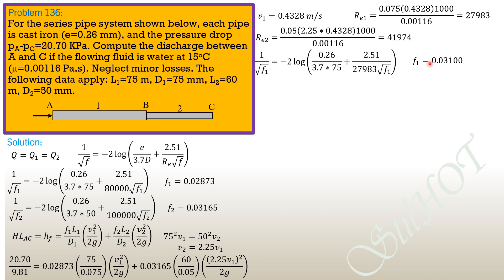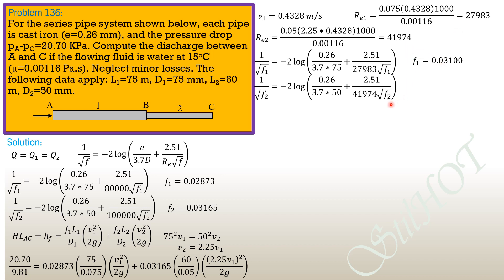For pipe 2: 1 over square root of F2 equals negative 2 log of (0.26 over 3.7 times 50) plus (2.51 over 41,974 times square root of F2). Solving, F2 equals 0.03281.